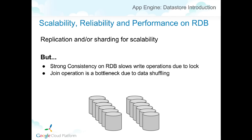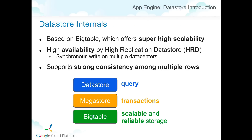A traditional RDB ensures strong consistency, which is why it's hard to achieve scalability without sacrificing performance in an RDB, and why Google pursued another solution — Datastore for App Engine. Datastore is based on Bigtable, a super high-scalability underlying technology used throughout Google, and Bigtable is the key for Datastore to secure scalability.